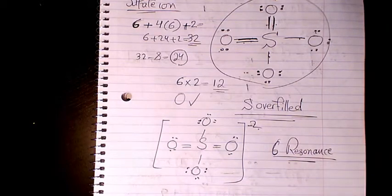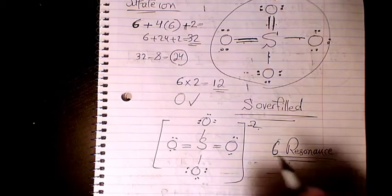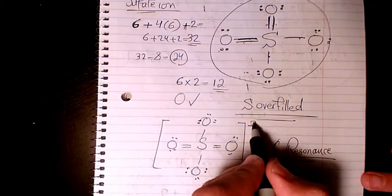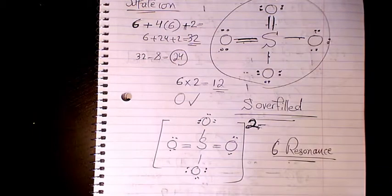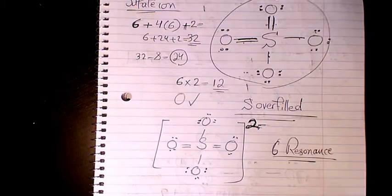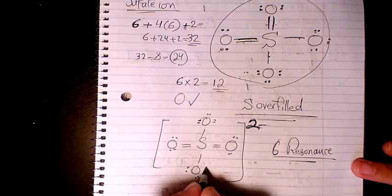So that's basically the Lewis structure for SO4 2-. I hope you enjoyed this video. Please leave me a comment if you have any question and I'll get back to you as soon as I can. And here it's going to be 2- not -2, so 2-. Please leave me a comment if you have any question and I'll get back to you as soon as possible. Thank you.